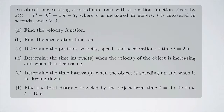Part A: find the velocity function. Part B: find the acceleration function. Part C: determine the position, velocity, speed, and acceleration at time t equals 2 seconds. Part D: determine the time intervals when the velocity of the object is increasing and when it is decreasing, and when the object is speeding up and when it is slowing down. Finally, find the total distance traveled by the object from time t equals 0 seconds to time t equals 10 seconds.